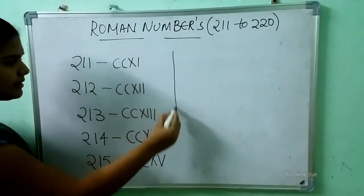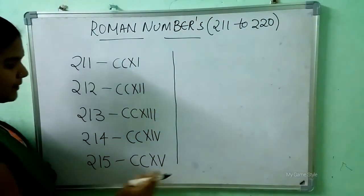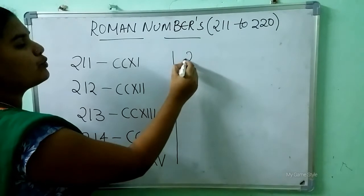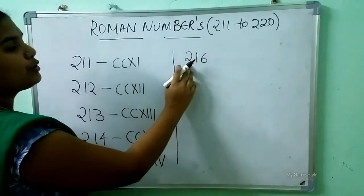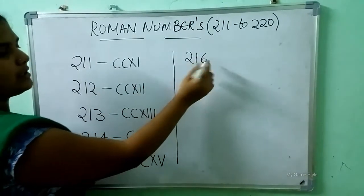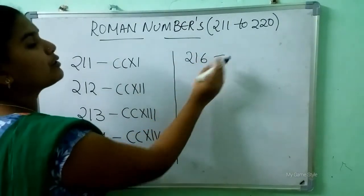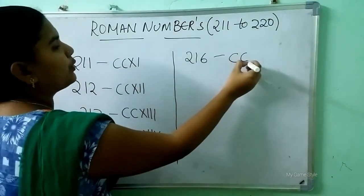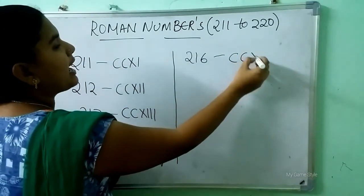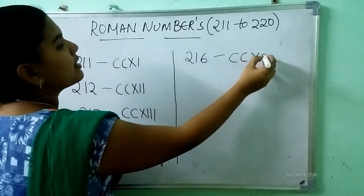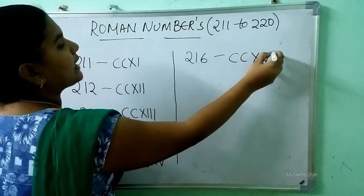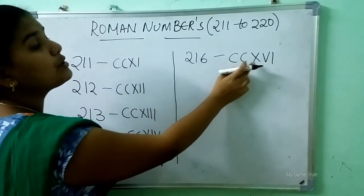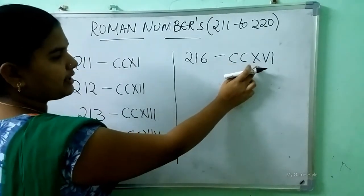After that comes 216. So how to write 216 here? Double C is 200, X, V, I is 16. So this means 216.